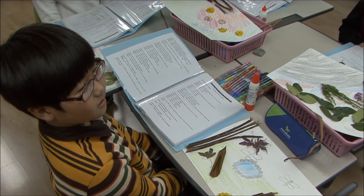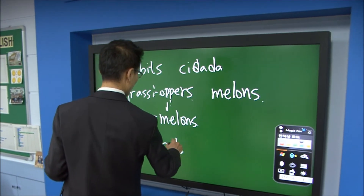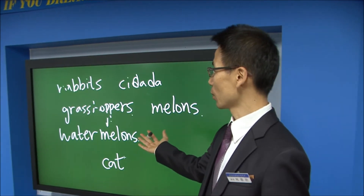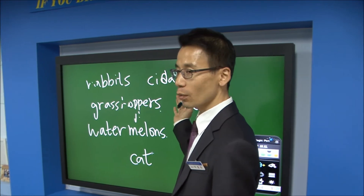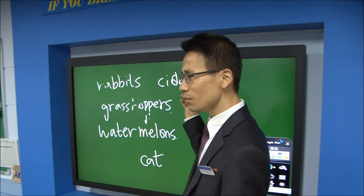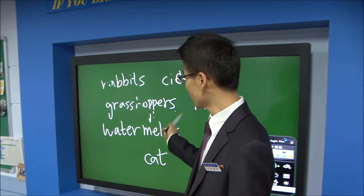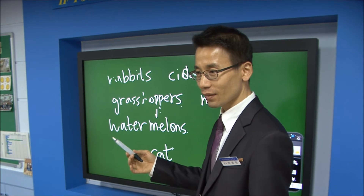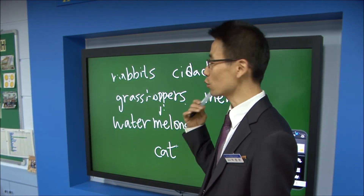Cat — good, good. Okay, everyone look at the blackboard please. I wrote some creatures which you can see in summer. Can you divide them? How can you divide animals and plants?